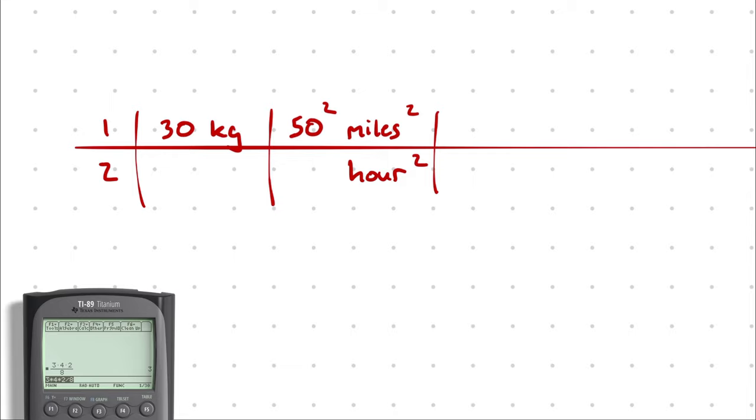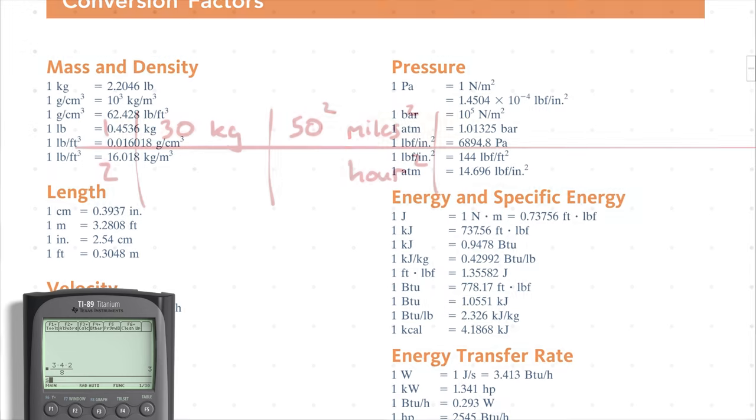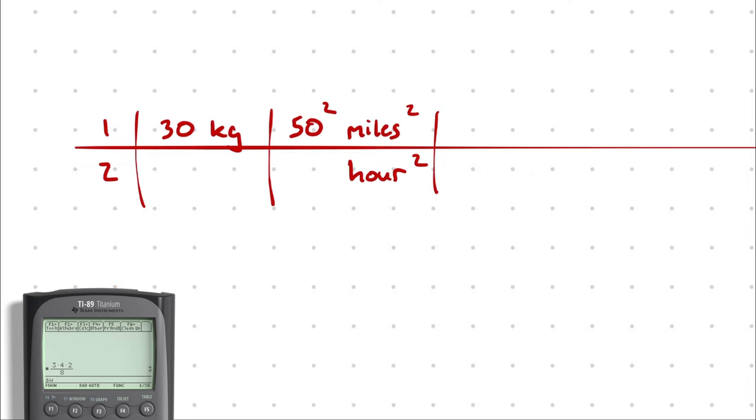For that I would have to figure out the unit conversion associated with going from kilogram mile squared per hour squared to kilojoules. But I probably don't have that conversion memorized. That's a very specific conversion. Instead I can handle each of the conversions individually. Those are a little bit more straightforward and I have a conversion factor sheet full of all the common ones. Armed with that conversion factor sheet I should be able to handle this unit conversion in a pretty straightforward manner.